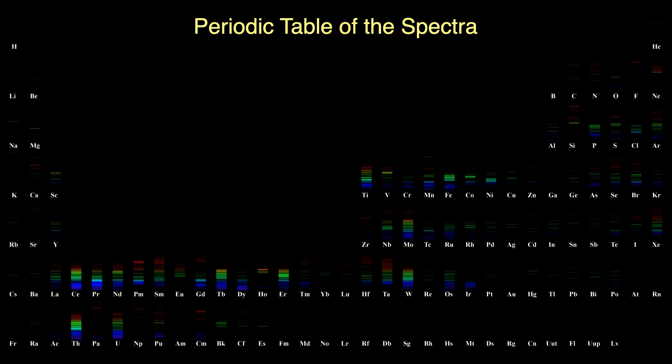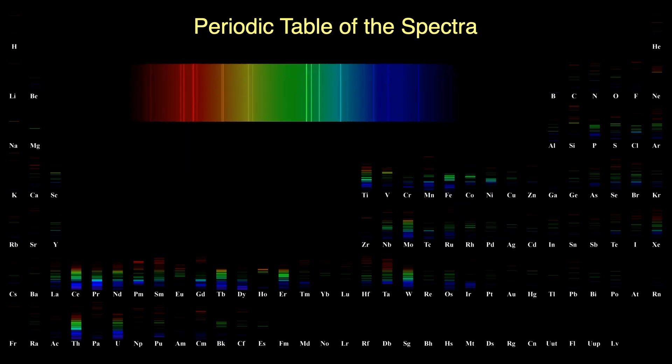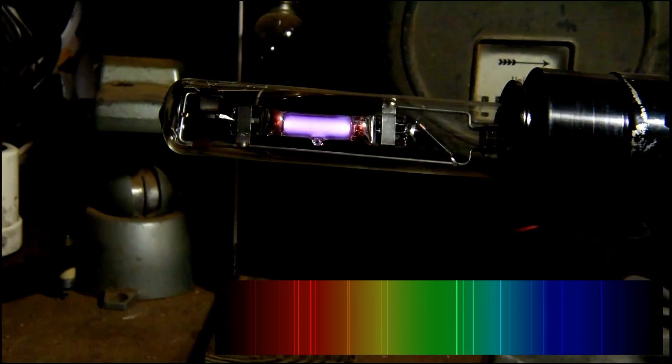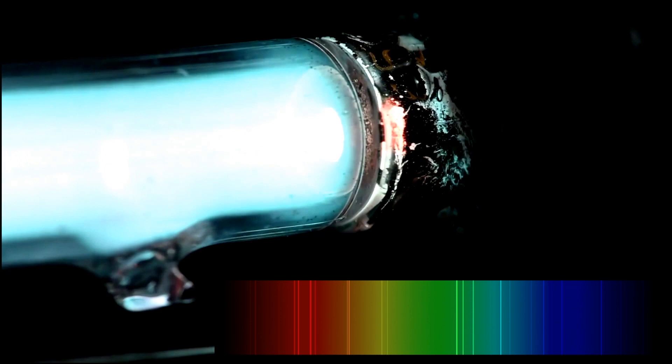From our periodic table of the spectra, we see that cadmium displays a variety of emission lines across the spectrum. What's not obvious from this picture is that most of the light comes from the green and blue end of the spectrum. The bright lines given off by cadmium are all combined in this special cadmium lamp. When the lamp is first turned on, you see the purplish glow of argon gas, which then vaporizes the solid cadmium in the glass tube, and you see its beautiful bluish-green glow.